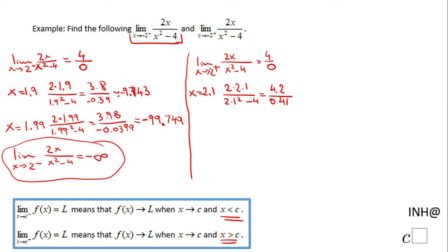And this quotient will be 10.243. Let's go even closer, 2.01. So we're going to have 2 times 2.01 over 2.01 squared minus 4, and that'll be 4.02 over, let's see the denominator, that will be 0.0401. So we're going to do the division now.